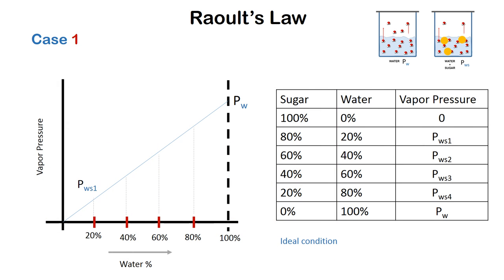Here we have plotted the vapor pressure of the solution at different concentrations of sugar. When the concentration of sugar is 0%, the vapor pressure of the solution is that of pure water. As we add more sugar, the vapor pressure of the solution falls.